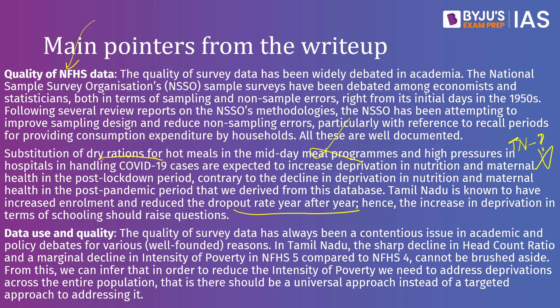This is also proof that the data collection from the government side is not correct, because if you look at the situation on the ground, it does not tell you that poverty should have declined so much in the past five or six years. The data we have has not been used properly. The Multi-Dimensional Poverty Index is not a great way to identify the poor because the average is taken and individual parameters are ignored.